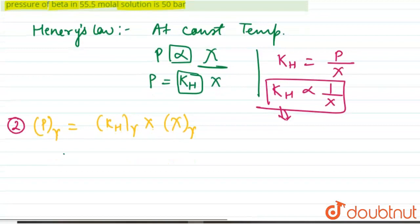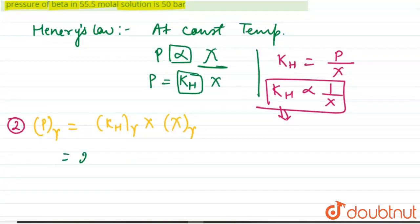Now we know that KH given is 2×10^-3 kilobar according to the data given in the question.